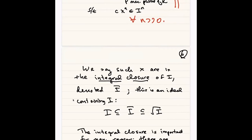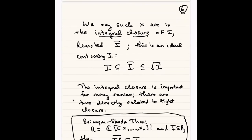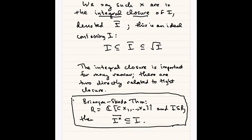Several things had been proved using analytic methods that had no known algebraic proof. This is what Hochster based many of his lectures on, and one of them was something called the Briançon-Skoda theorem. The Briançon-Skoda theorem states: if R is a power series ring in n variables and I is an arbitrary ideal, then the integral closure of the n-th power of I is contained in I itself. The n here — notice these n's match up: the number of variables equals the power of I.